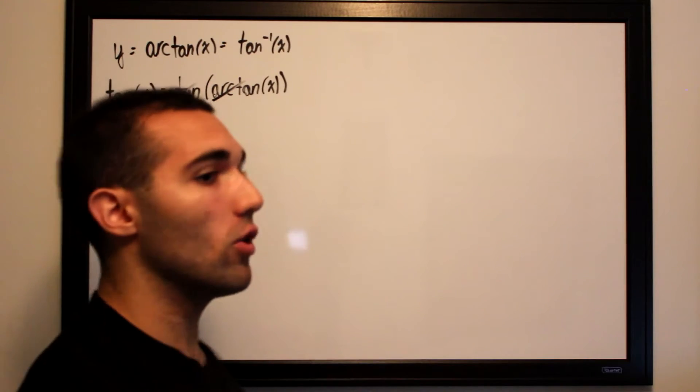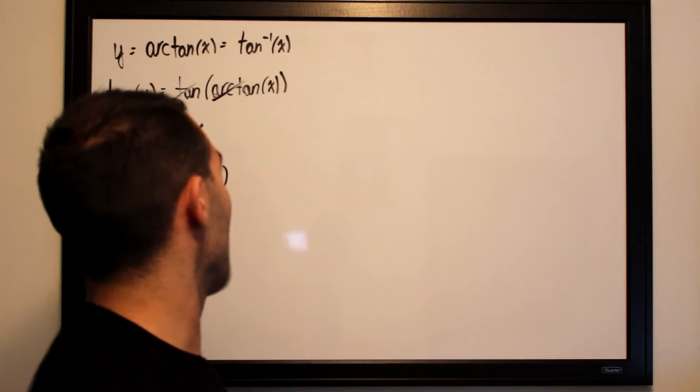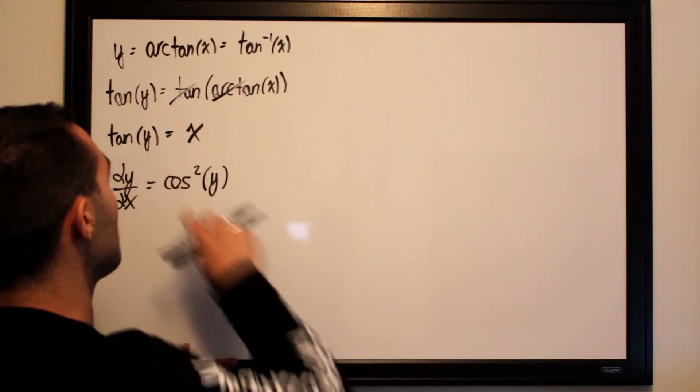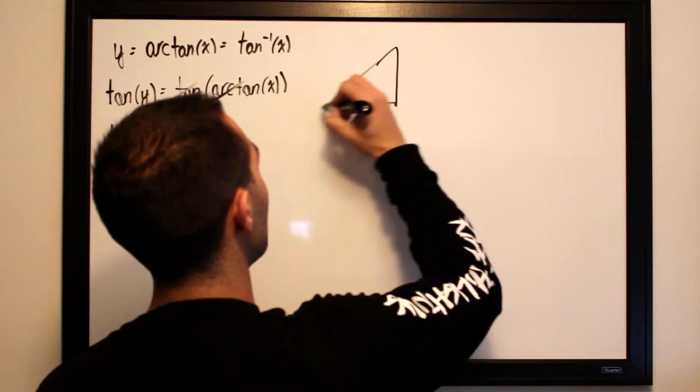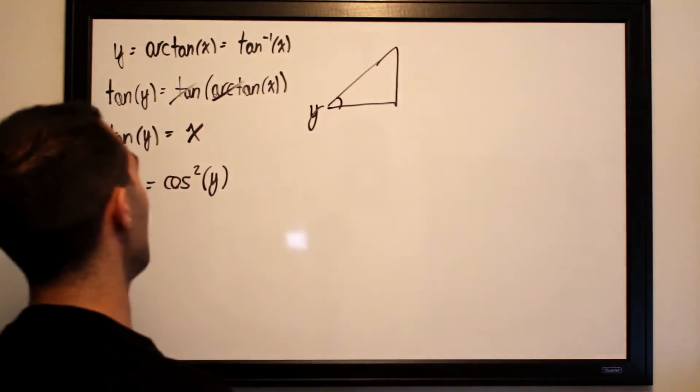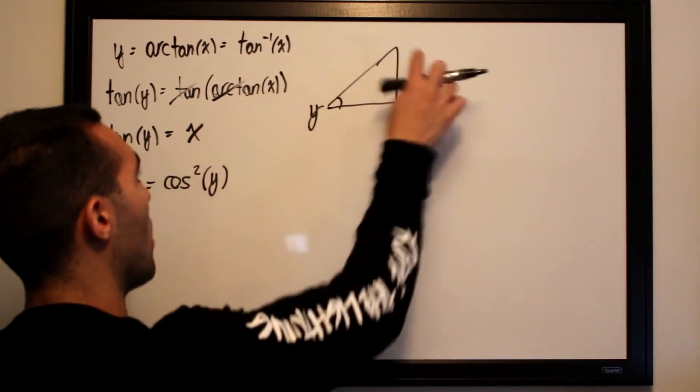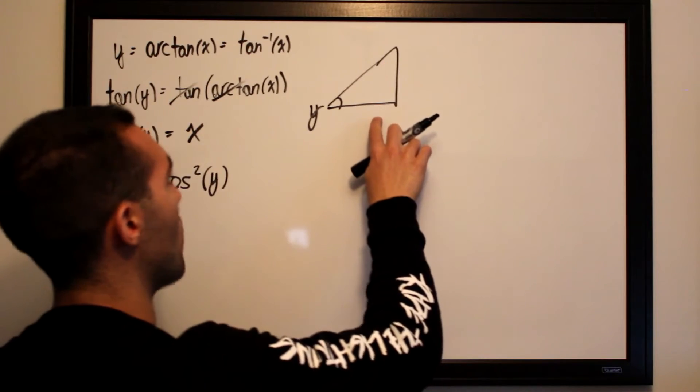So what we'll do here is construct our triangle, as we have done in previous videos, where the tangent of our angle y—our angle y right over here—the tangent, which is the opposite over the adjacent, is equal to x.